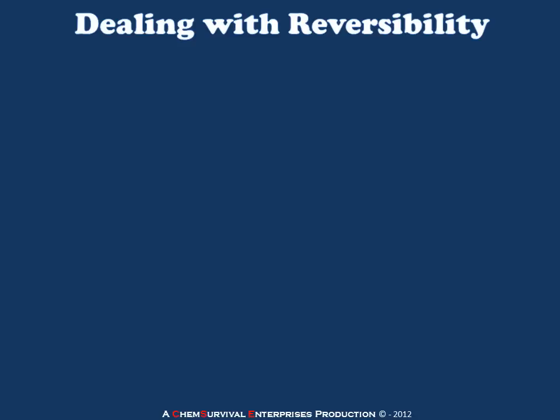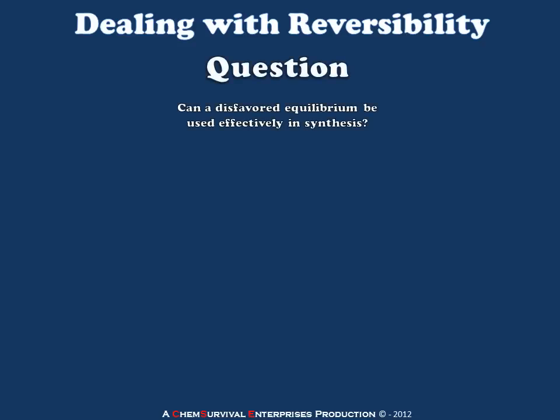Welcome to our discussion about dealing with reversible reactions in the Synthetic Organic Chemistry Lab. Now that we're past our technique laboratories, we're interested in designing syntheses which will yield relatively high amounts of product using the simplest available reactions. The problem with using the simplest available reactions is that they're often reversible, which means they're potentially endergonic, and many actually are. That means they don't favor products — they favor starting materials — and yet they're very frequently used in organic synthesis.